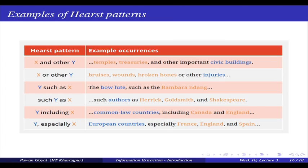Here are example occurrences: pattern 'X and other Y' - 'temples, tragedies and other important civic buildings' - immediately you see temples and tragedies are sub-concepts of civic buildings. Pattern 'X or other Y' - 'bruises, wounds, broken bones or other injuries' - all these are hyponyms of injuries. 'Y such as X' - 'the bolute such as the bumbarandang' - bolute is the super-concept, bumbarandang is the sub-concept. 'Such Y as X' - 'such authors as Hardy, Goldsmith and Shakespeare.' Hearst manually found all these patterns and from these patterns he tried to extract hyponymy pairs from the text data.